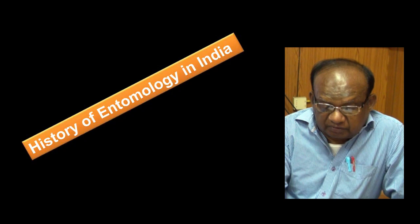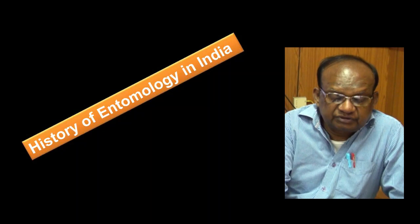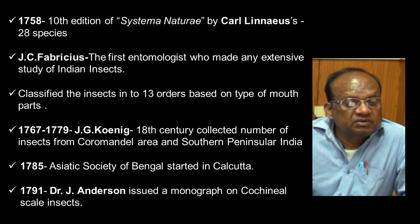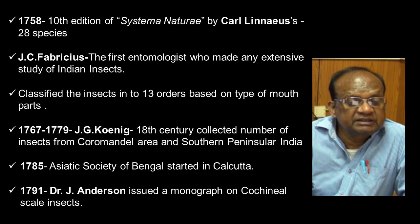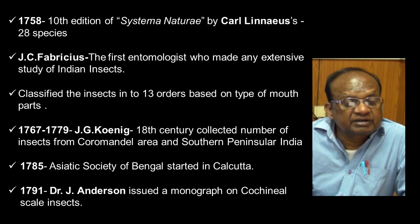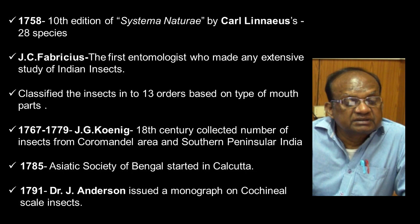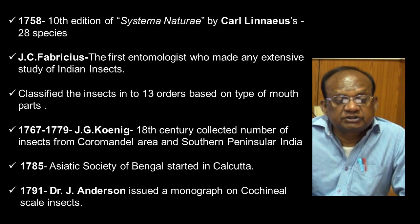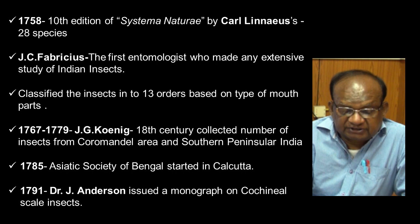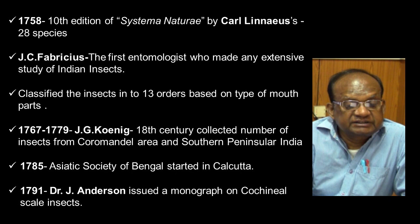The next aspect is the History of Entomology — the development of the Science of Entomology in India. During 1758, the eighth edition of Systema Naturae by Carl Linnaeus, having 28 species, was mentioned. Then J.C. Fabricius, the first entomologist who made any extensive study of Indian insects, classified insects into 13 orders based on types of mouthparts.